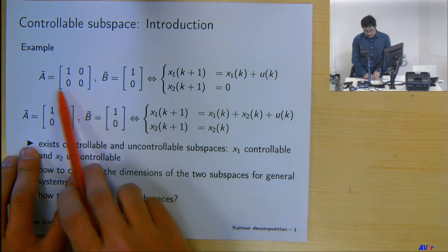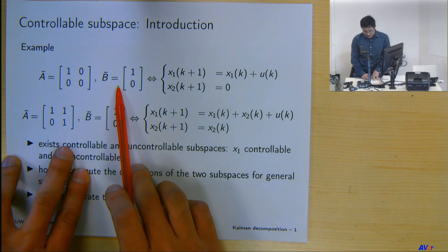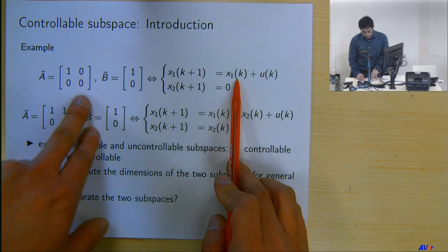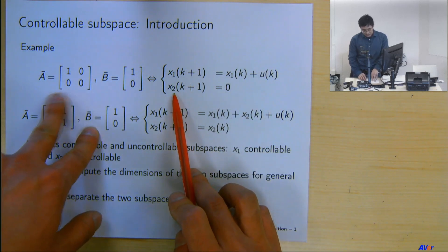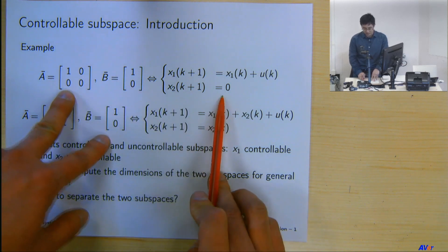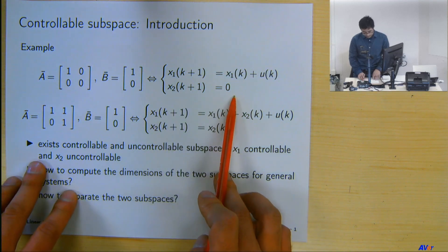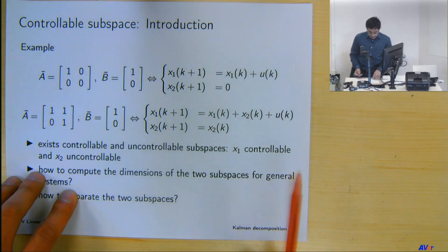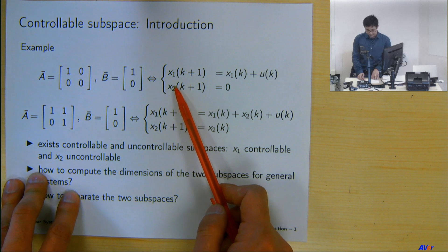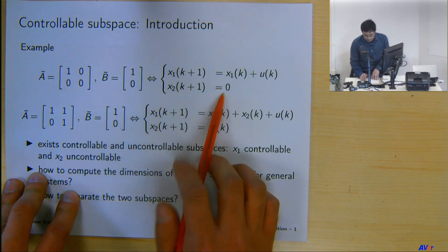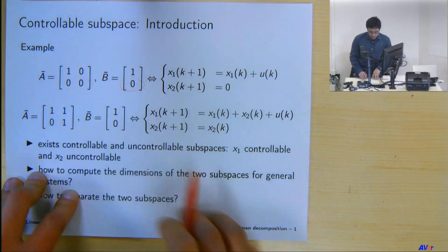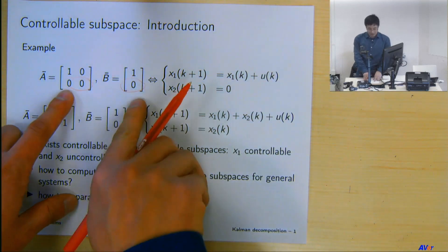Let's say two examples. First, the A and B matrices look like this. In discrete time, x1(k+1) = x1(k) + u(k), and x2 doesn't depend on the input, nor does it depend on x1 or x2 — so it just stays there. We can see that the input can only control x1. x2 is uncontrollable, as we can see from the structured zeros here.